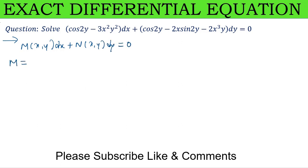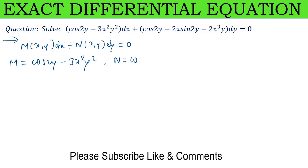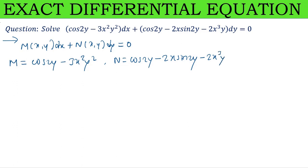So now, M is cos 2y - 3x²y², and N is cos 2y - 2x sin 2y - 2x³y.